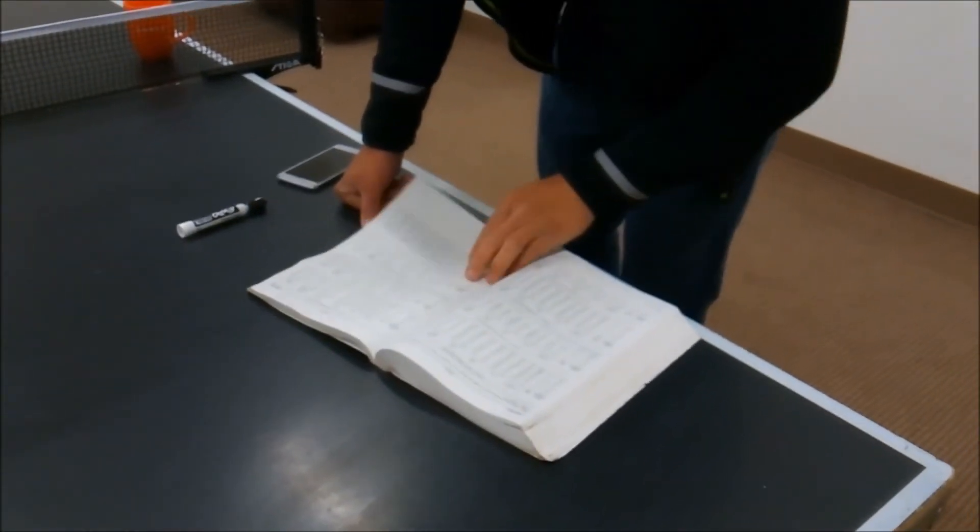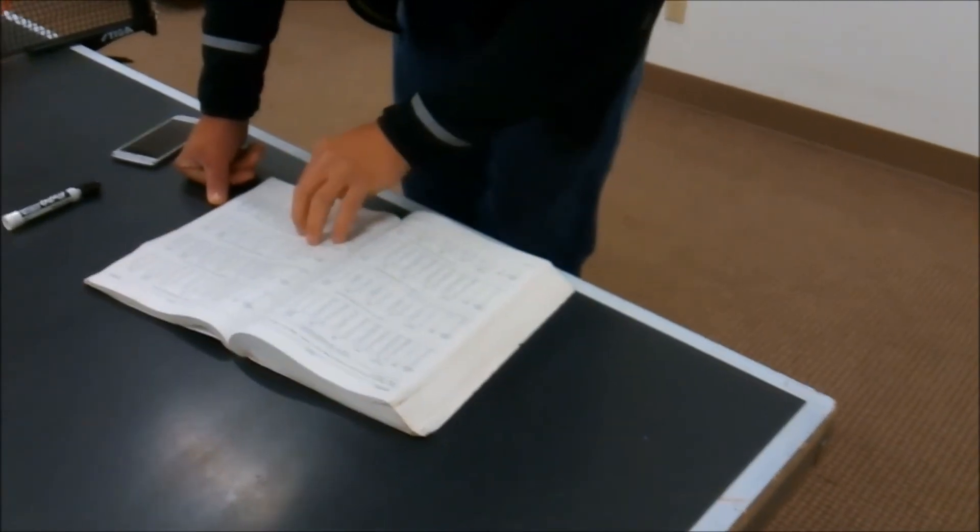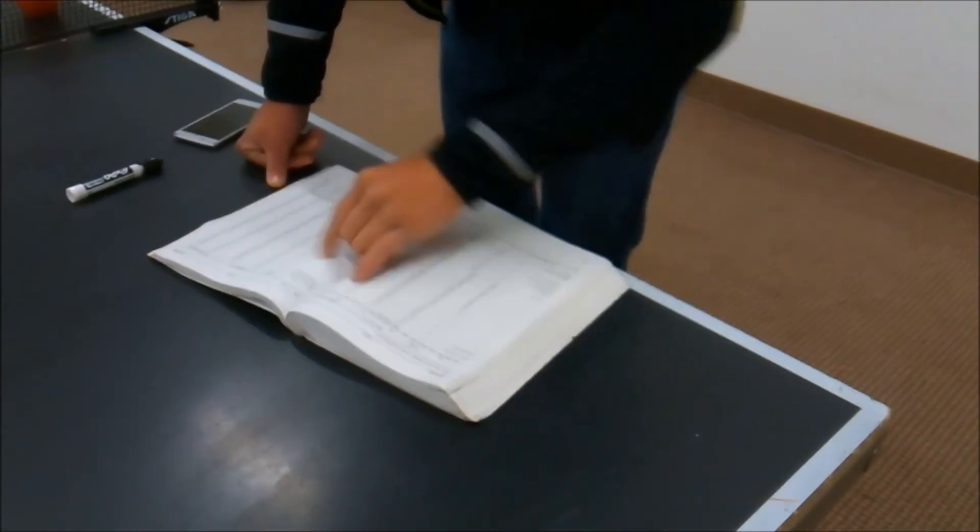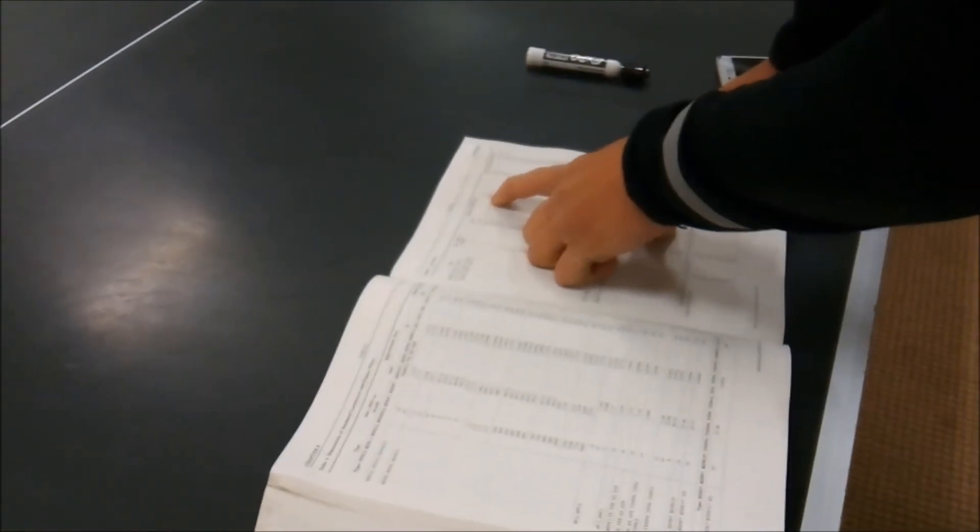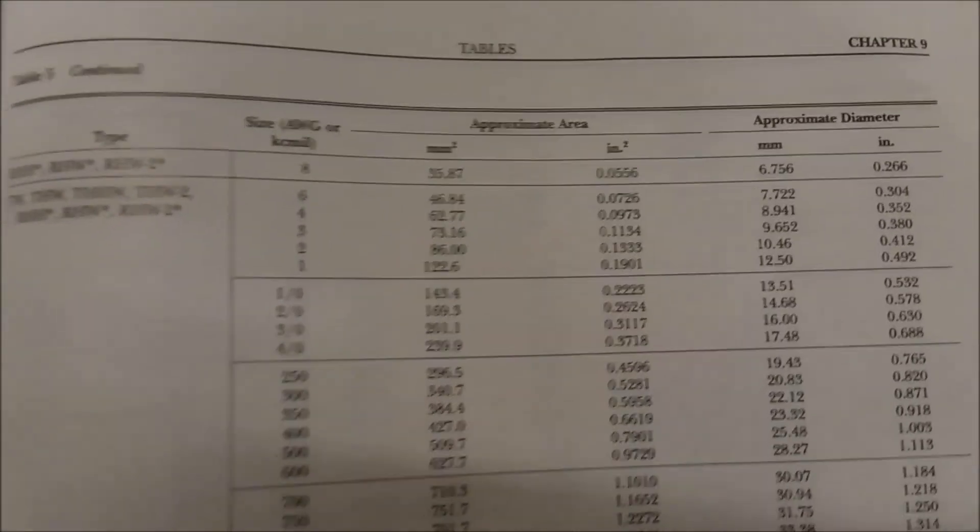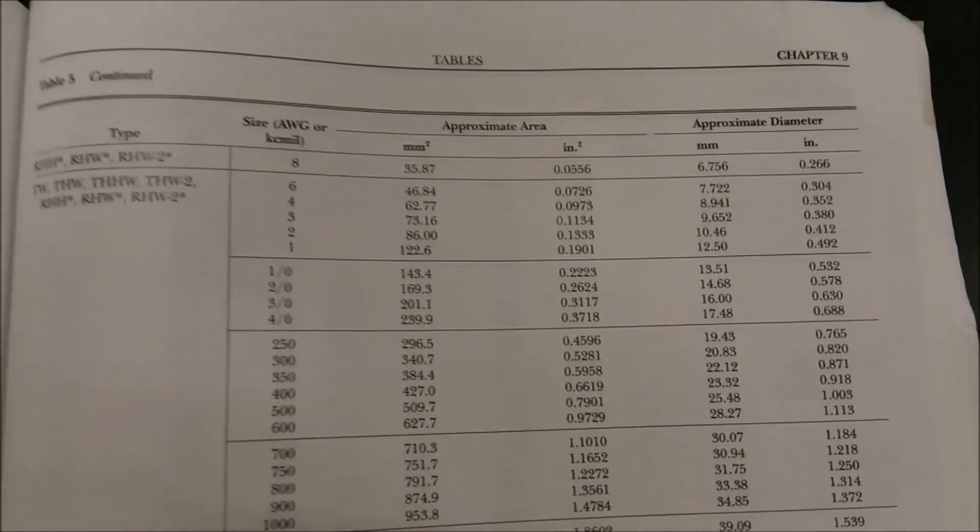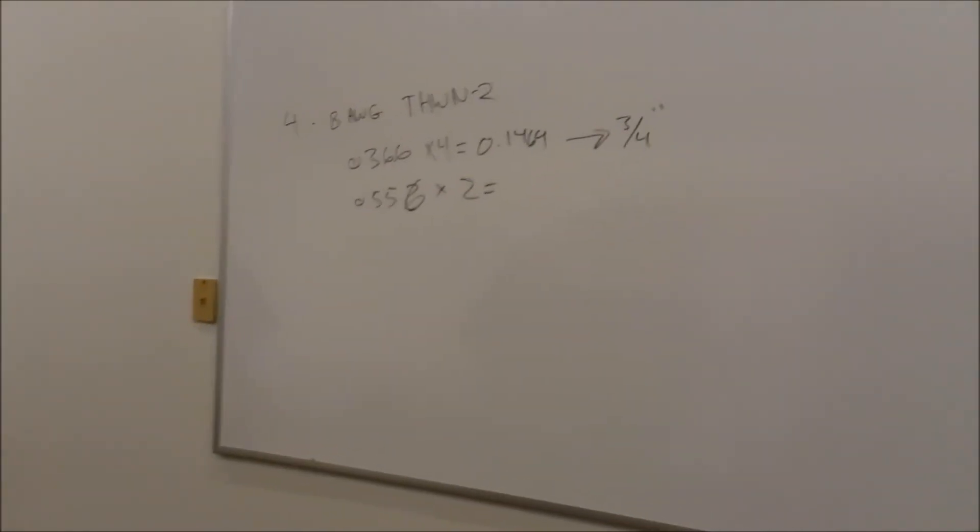We flip back, that is also in table 5 up at the top. So 8 gauge RHW is .0556. So we'll multiply that by 2.